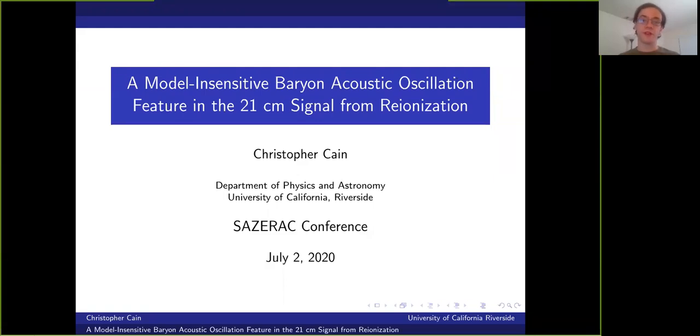Hi everyone, my name is Christopher Kane and I'm a graduate student at the University of California, Riverside. Today I'd like to tell you about a new source of BAO features in the redshifted 21 centimeter signal from cosmic reionization. A feature like this would not only make it easier to detect and identify the signal, but could also aid in constraining the reionization process.